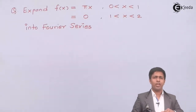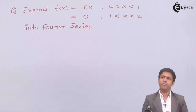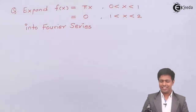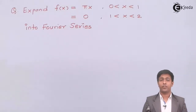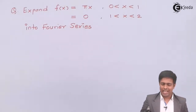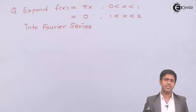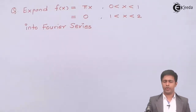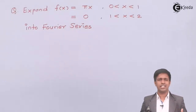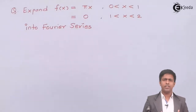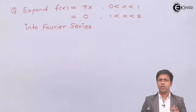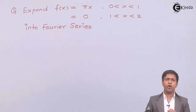We are going to solve a numerical based on Fourier series. We have to expand f(x), where f(x) equals pi*x between 0 to 1, and f(x) equals 0 between 1 to 2. We have to find the Fourier series for this given function. The range is 0 to 2, so we need to identify which formula format it matches.